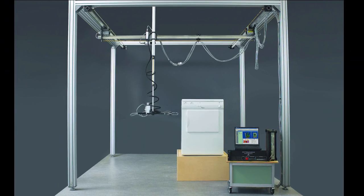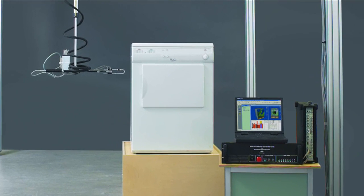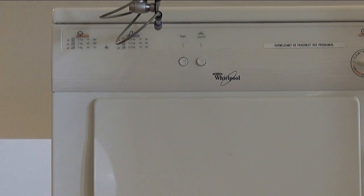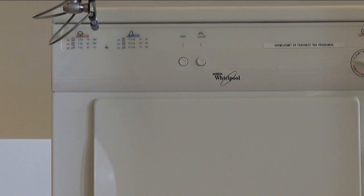The same setup can also be used to measure sound power according to the ISO standards. A sound intensity probe, mounted on the end of a robot arm, can be moved from position to position on all five sides of the washing machine.